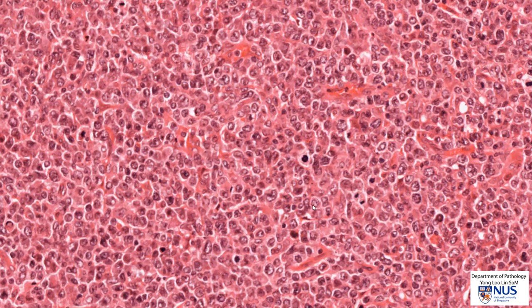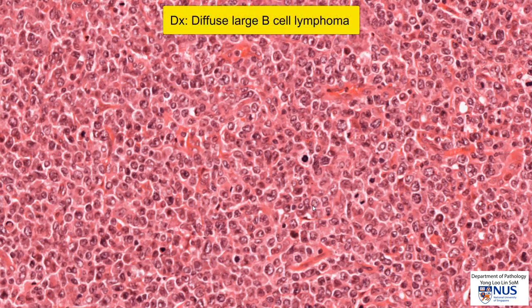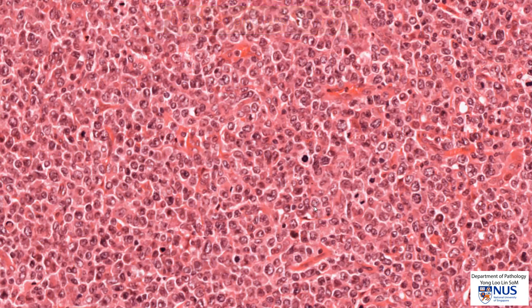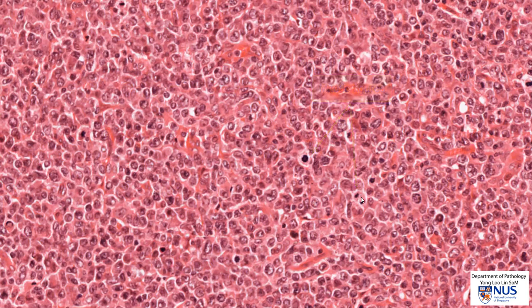Of course, in order to type the lymphoma, we have to do immunohistochemistry and sometimes molecular tests as well. After doing immunohistochemical tests, this turns out to be a diffuse large B-cell lymphoma — one of the commonest types of lymphoma with large cell morphology. Here we can also see quite a few mitotic figures. This is usually an aggressive tumor; however, it may respond well to chemotherapy.